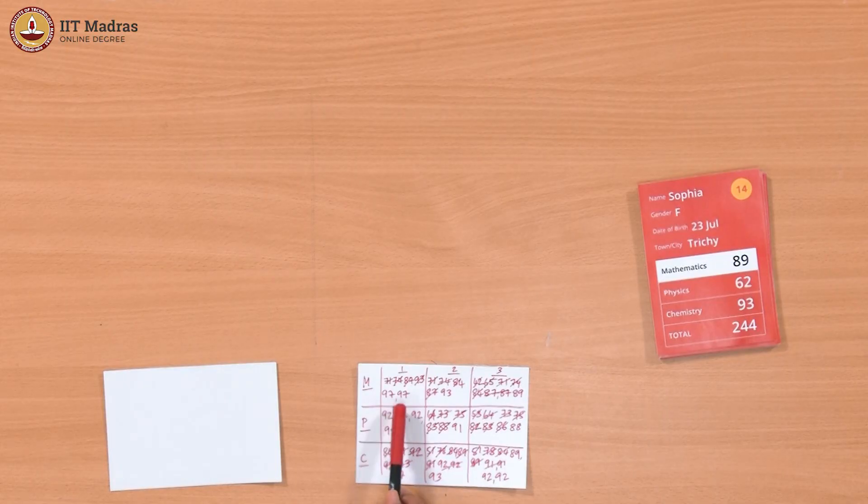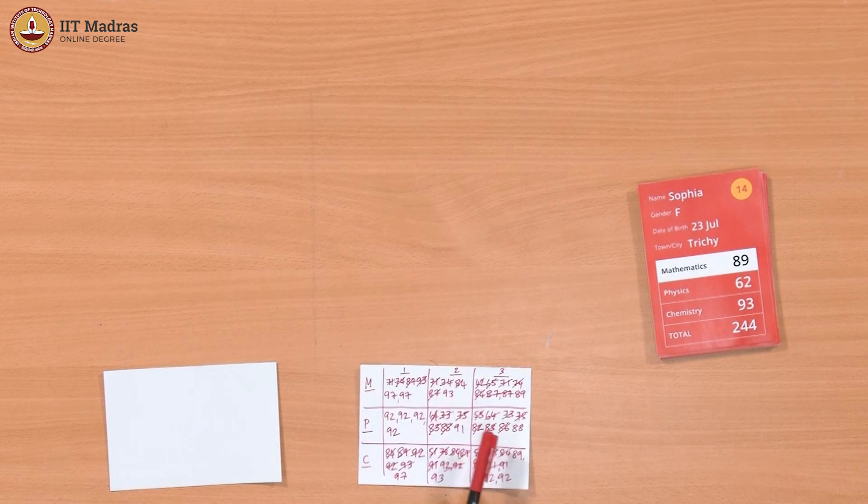We had calculated for each subject the top three marks in that subject. In mathematics for instance there were two with 97, one with 93, one with 89. So 97, 93 and 89 were the top three marks.